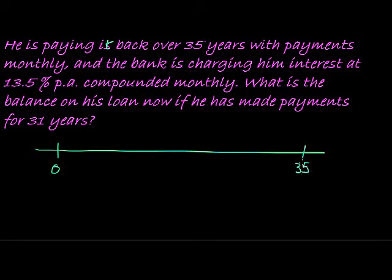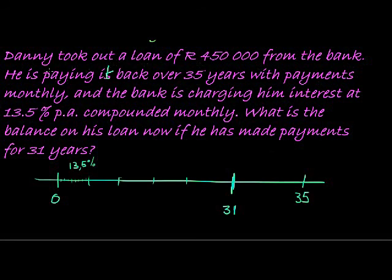So again let's do our timeline here. We go from 0 to 35 years, and we are here somewhere at 31. What's important is that we make monthly payments. So put in as much information as you can on this timeline. 13.5 percent per annum. Do we know what his amount is that he's paying back? Let's see, no we don't know what the amount is that he is paying back.